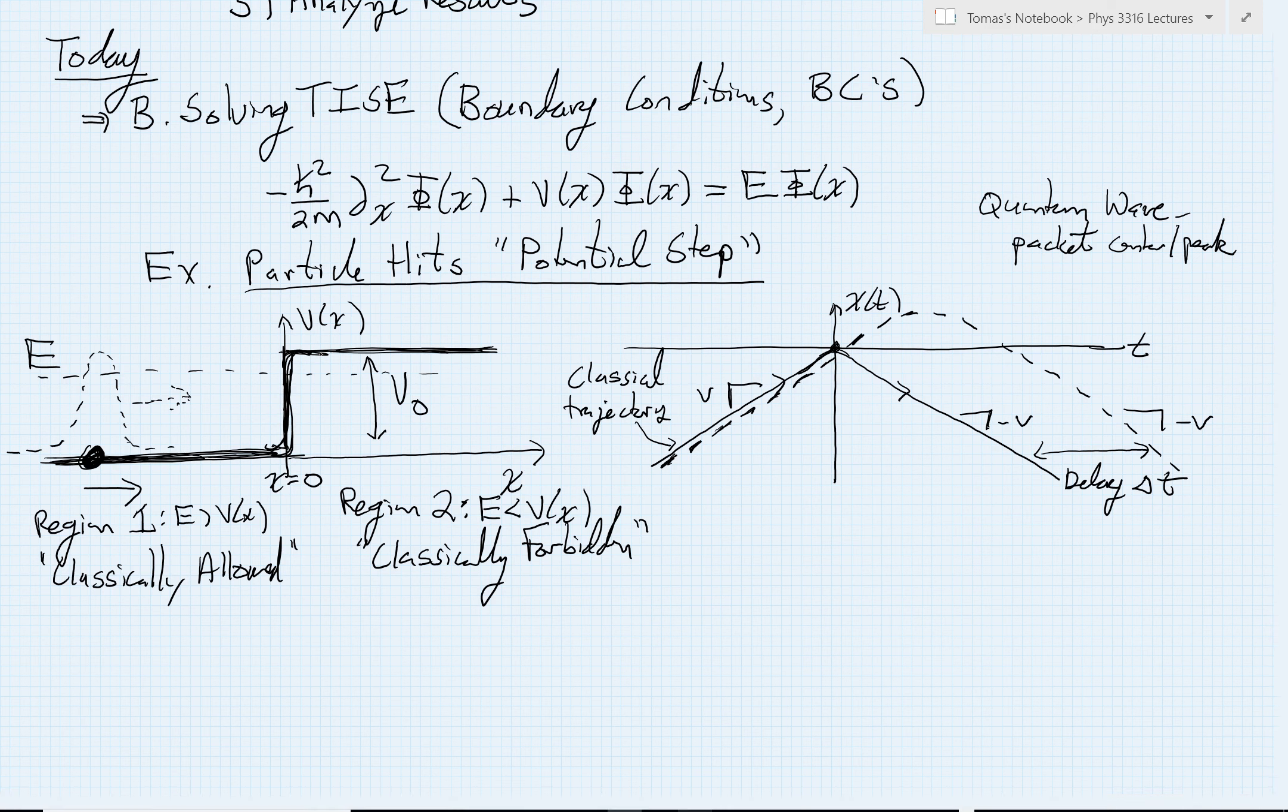We have this smooth function, but it changes very quickly to a constant value V naught. We're setting this up so that in region 2, we have what's called a classically forbidden region. This is where the total energy is less than the potential energy. That means classically, the particle is not allowed to be in that region. It's forbidden.